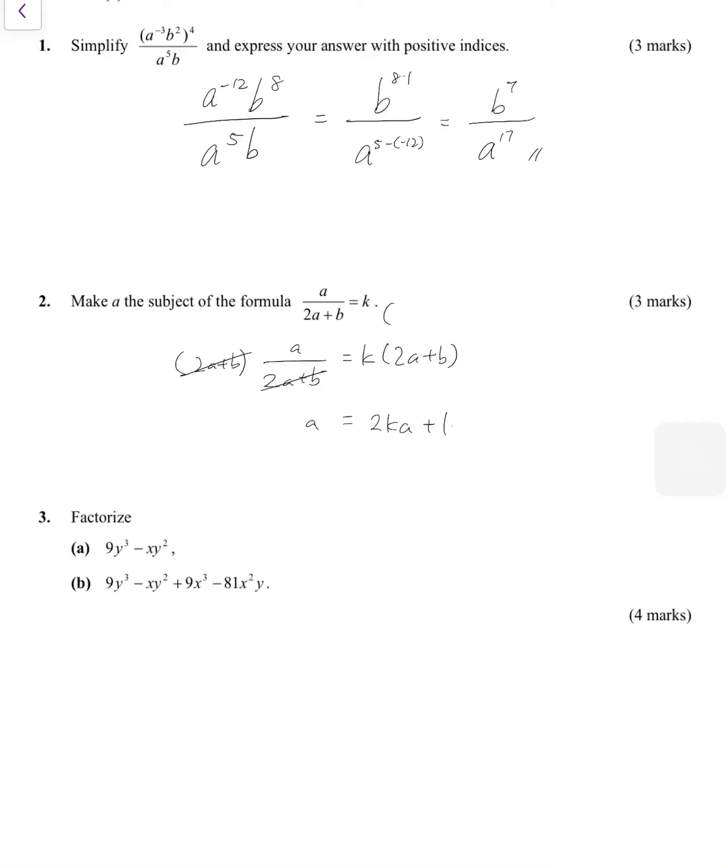Since you need to make a the subject, move the a's together and then factorize the a. Remember it's the a, so there's only one left, so it's 1 minus 2k.